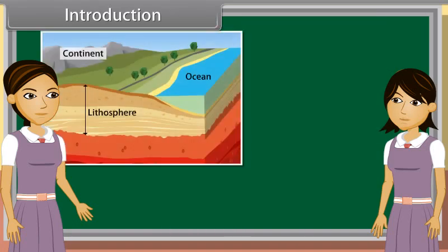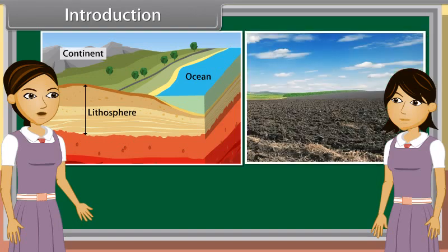Lithosphere is the main life-supporting system and the top layer of earth is called soil. Soil is the main natural resource which is essential for survival and development. Soil covers more than four-fifths part of land.